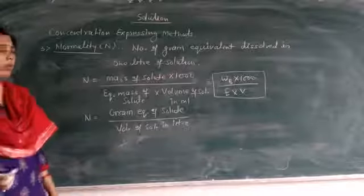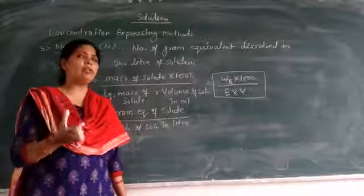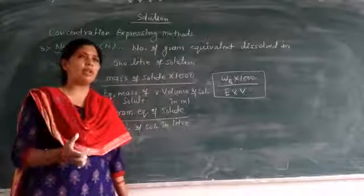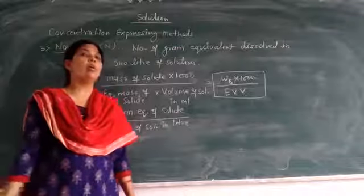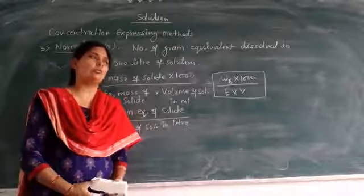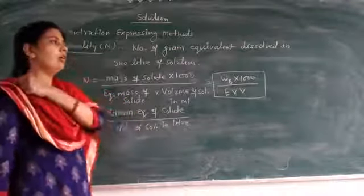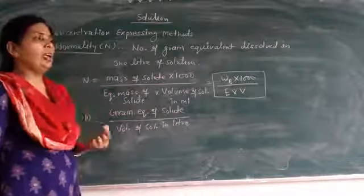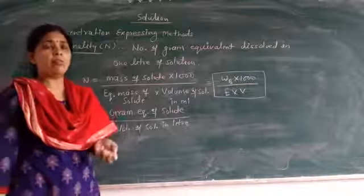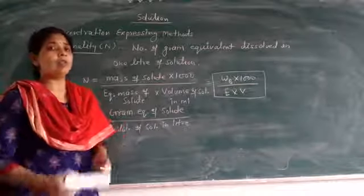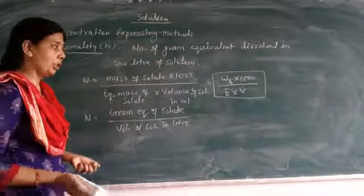If one gram equivalent of solute is dissolved in one liter of a solution, the resulting solution will be called a normal solution. Such type of solution is called a normal solution.